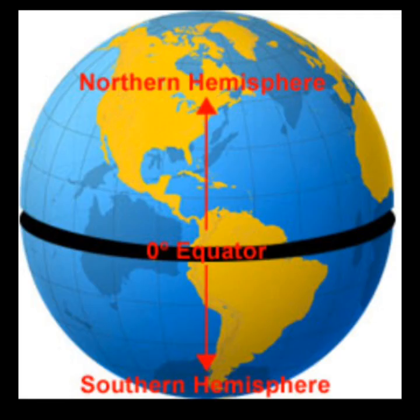The equator is at zero degrees. The equator divides the globe into two halves: the northern half of the Earth is known as the northern hemisphere, and the southern half is known as the southern hemisphere. They are both equal halves.